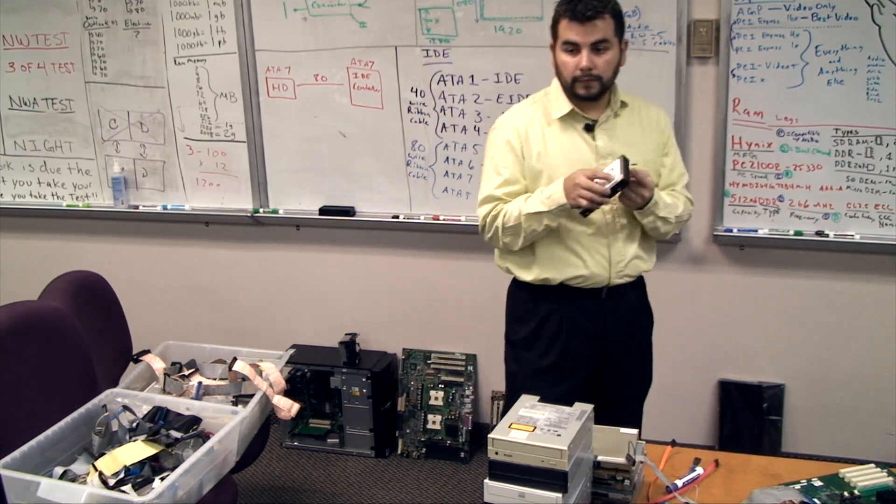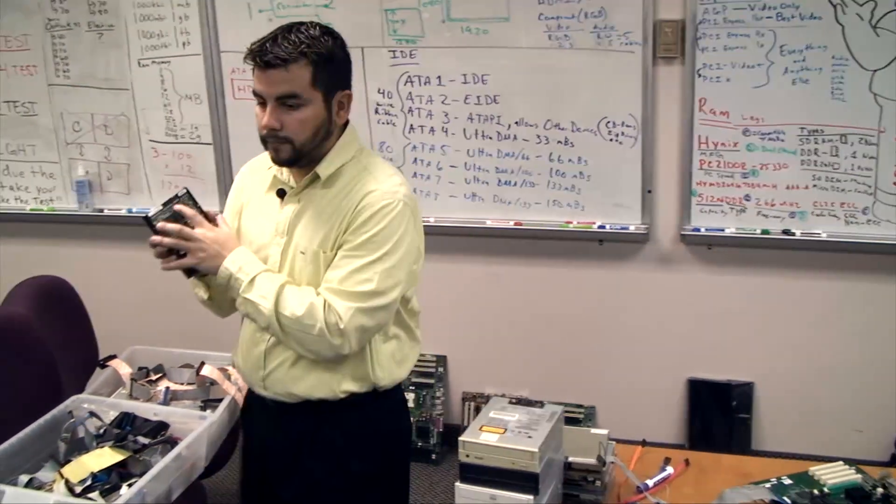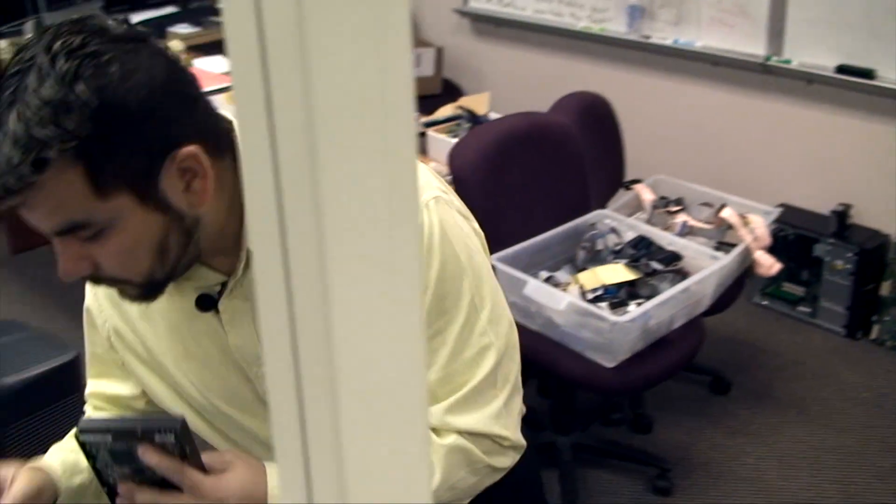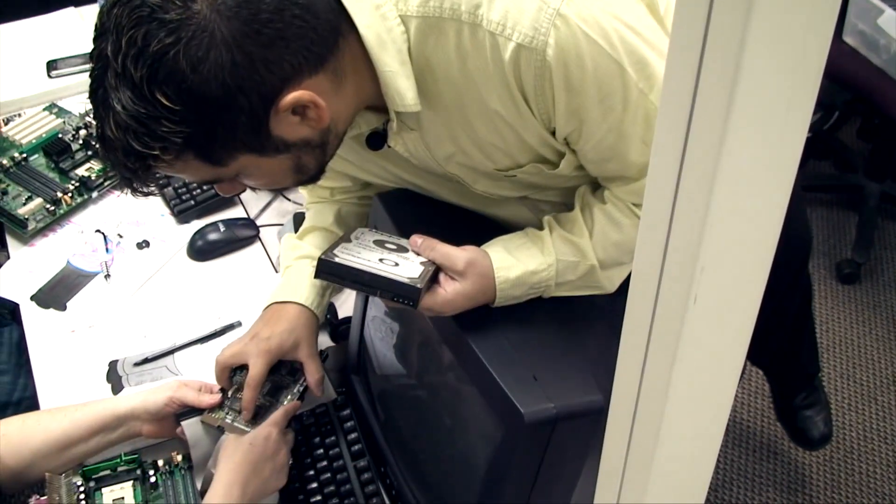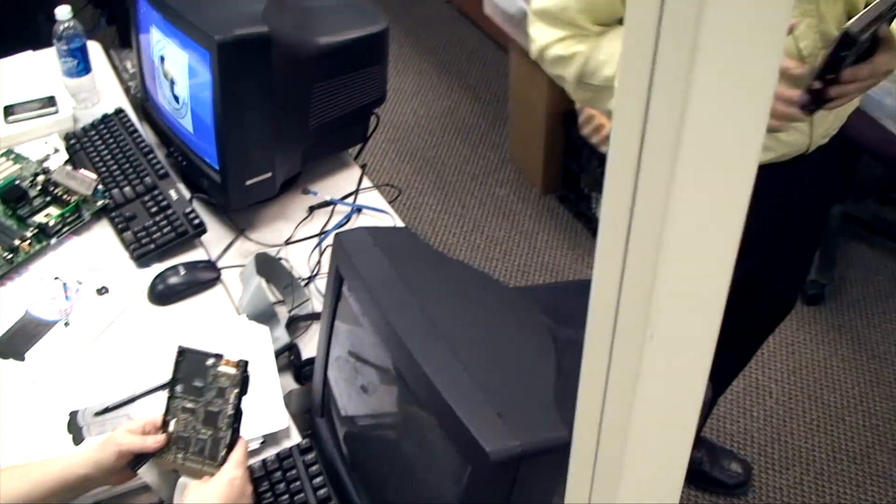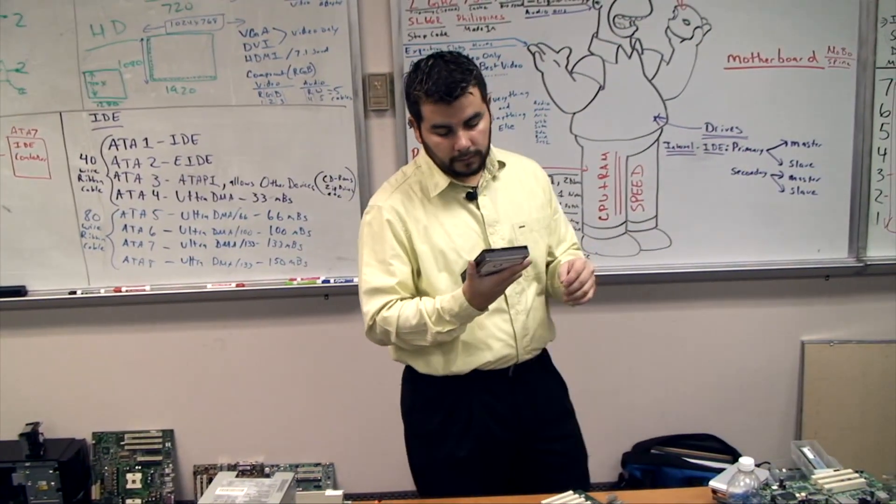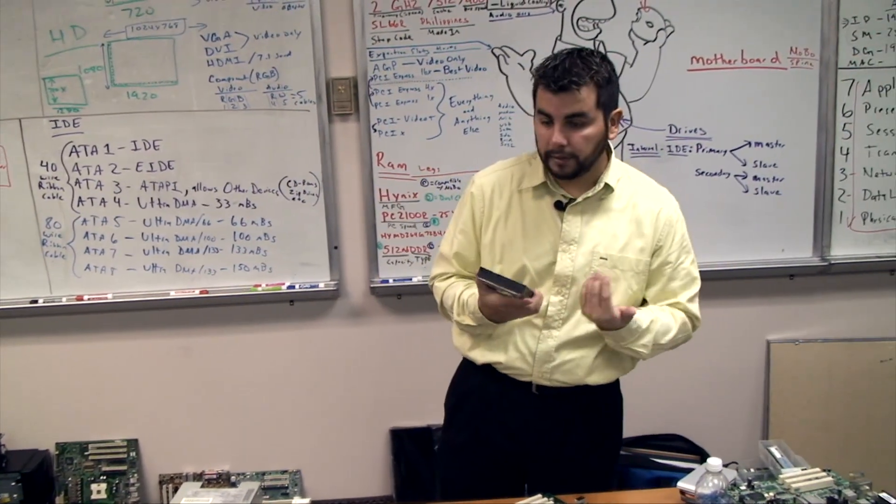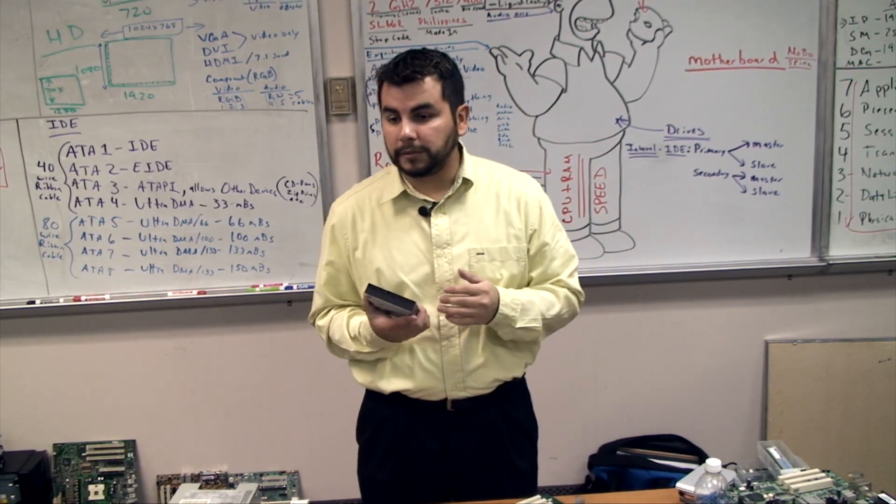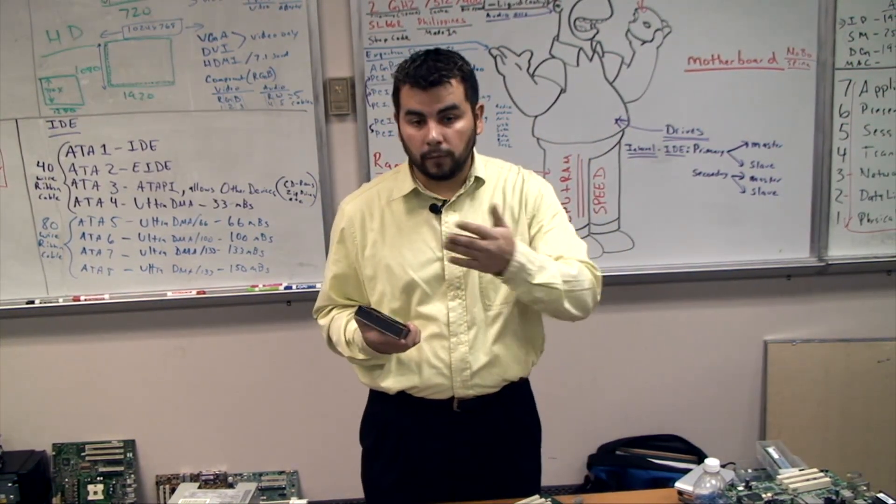So does it say Jumper 1? If you look at the bottom, it will. Jumper 1 and 40. It will always have something different. Sometimes it has J1. Mine just has a number, a 2 and a 40. That's it. Or sometimes I just have 40 and that's it. That means that 1 is on the other side.